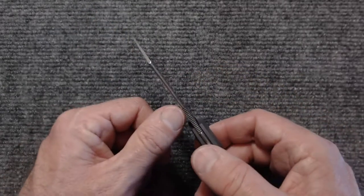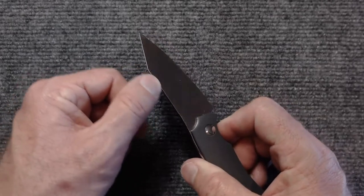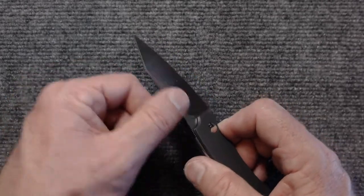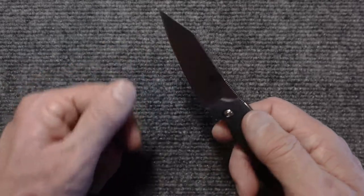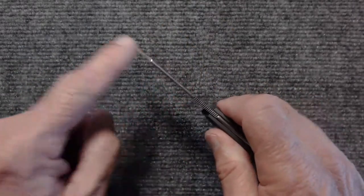And then up at the forward of the jimping again, the spine of the blade is radiused as well. So it has a really nice feel to it. It's very nicely finished.